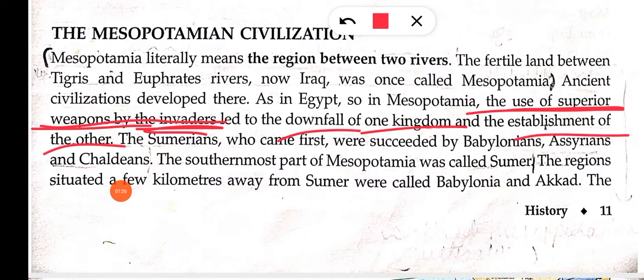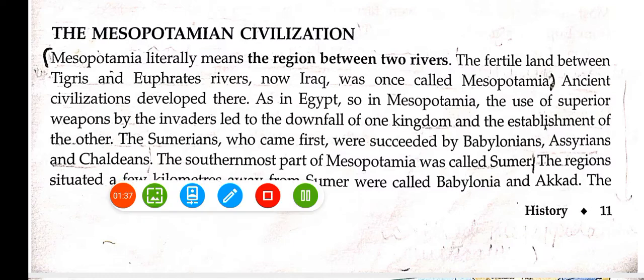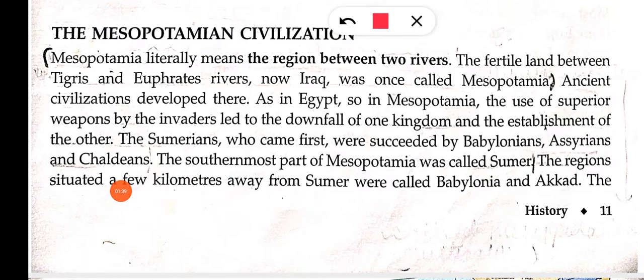Agar hum baat karein ki Iraq mein pehle kaun aaya — pehle aaye Sumerians. Unko succeed kiya Babylonians ne. Pehle Sumerians ko hara ke Babylonians ne raajpaat le liya. Then Assyrians, then Chaldeans. So the order was: Sumerians, Babylonians, Assyrians, and Chaldeans.